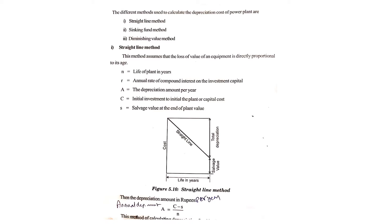If you are purchasing equipment, the value of the equipment will be decreasing year by year — that is called depreciation. This can be calculated by three different methods: the straight line method, the sinking fund method, and the diminishing value method. The straight line method gives you the depreciation amount per year — how much amount will be depreciated per year can be calculated using this method.